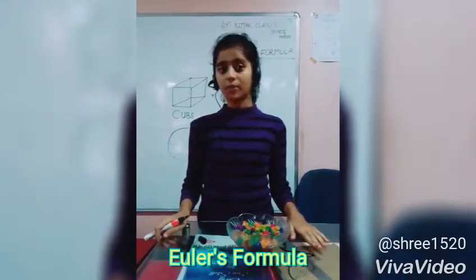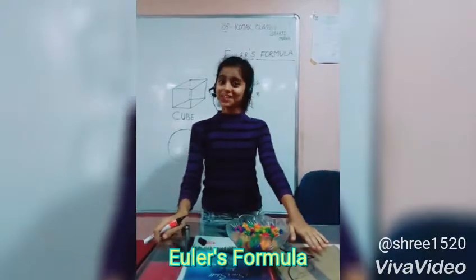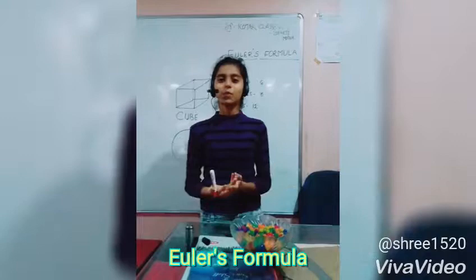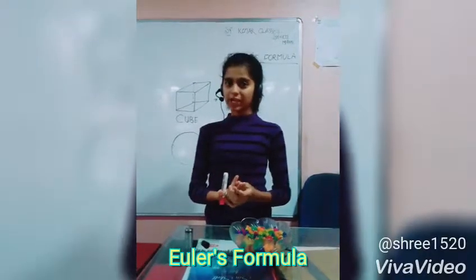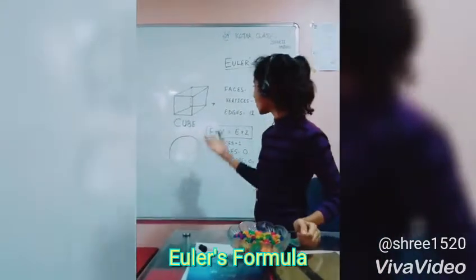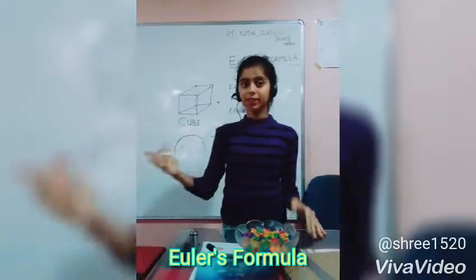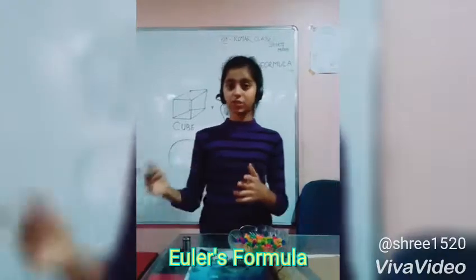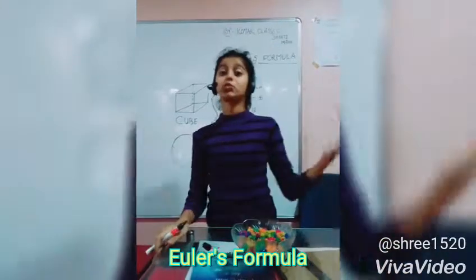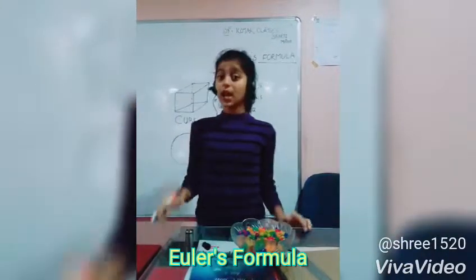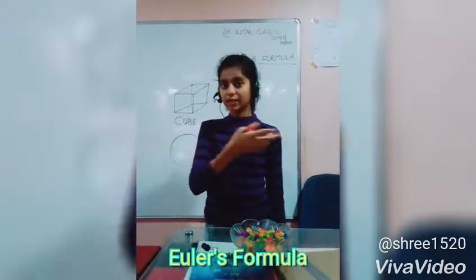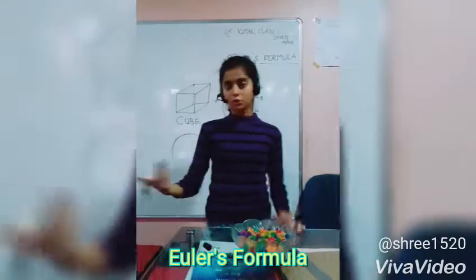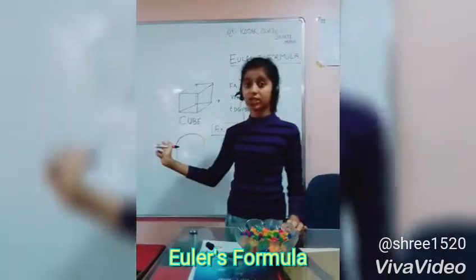Before starting with Euler's formula, I would like to recall faces, edges, vertices, and polyhedrons. You have already studied them, but now let's recall. You are very familiar with 3D and 2D shapes. 2D shapes are two-dimensional, having only length and breadth. 3D shapes are three-dimensional, having length, breadth, and height. So let's come to faces, edges, and vertices.